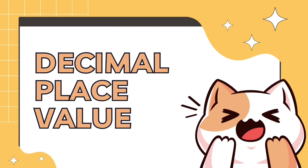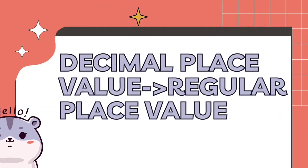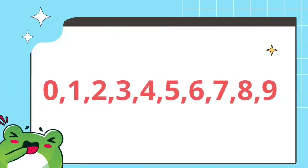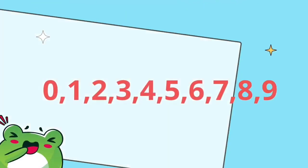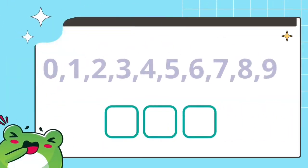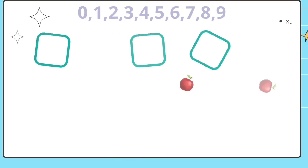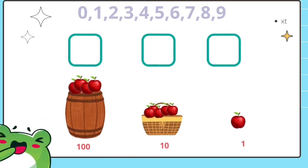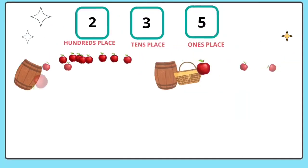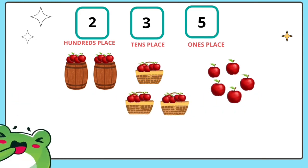In this video we are going to learn about decimal place value. As the name suggests, it's related to regular place value. In the previous video, we learned how to count using just 10 digits — number places that represent different size groups. If we needed to count 235 apples, we used different number places for counting by ones, by groups of 10, and groups of hundreds. Digit 2 in the hundreds place represents 2 hundreds, 3 in the tens place represents 3 tens, and 5 in the ones place represents 5 ones.